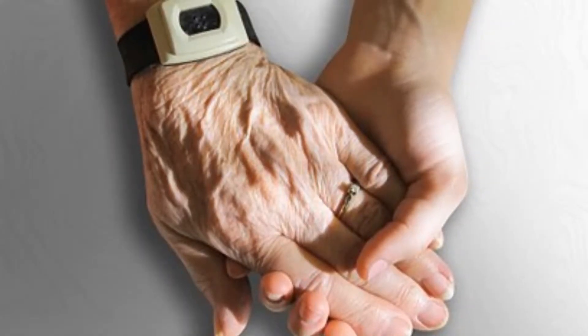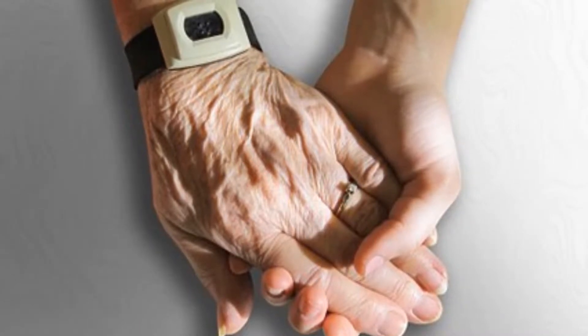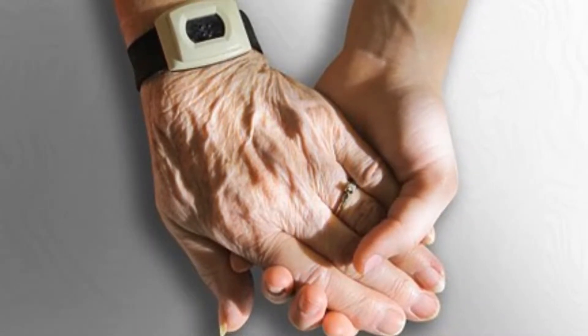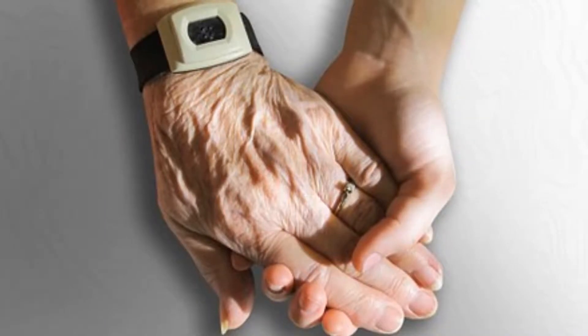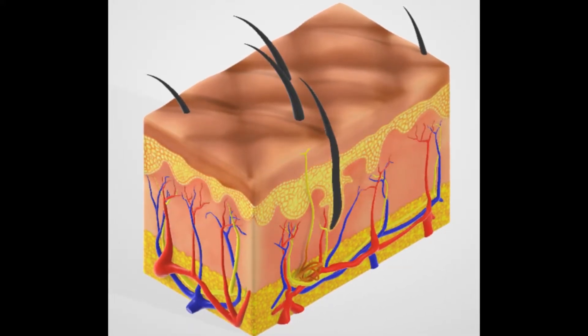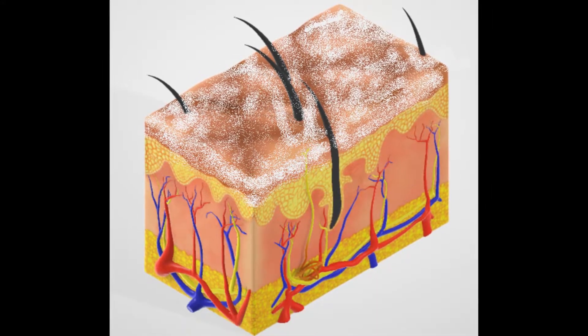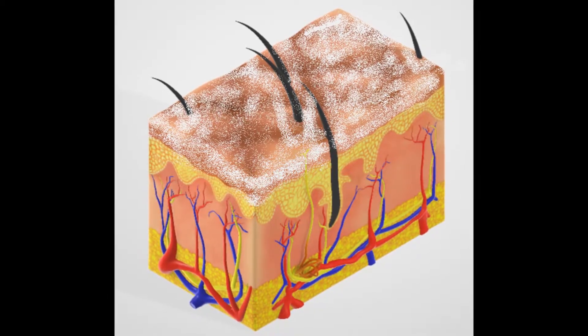With age, skin becomes less elastic, more fragile, and produces and retains less moisture. This causes wrinkles to be more noticeable. The topmost layer of your skin, the epidermis, begins thinning. It becomes less able to retain water. This causes cells to lose their plumpness.